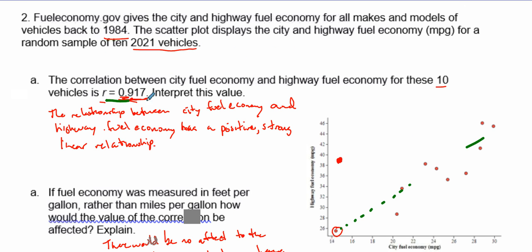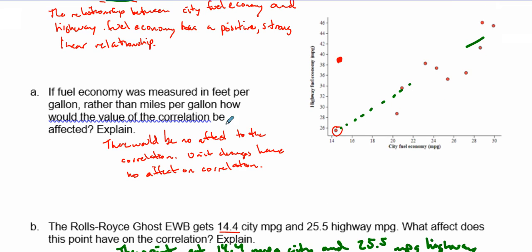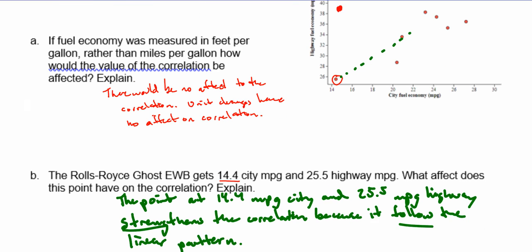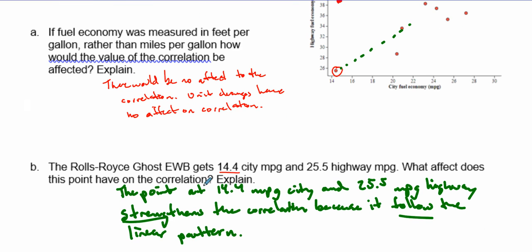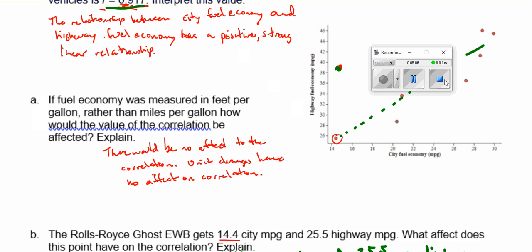There we have it — another great example of how we can interpret the r value, how it tells us about the direction and strength of our linear relationship. We also talked about how units have no effect on the correlation, and finally how outliers that follow the pattern strengthen the correlation while those outside the pattern weaken it. Good luck with the rest of the problems!